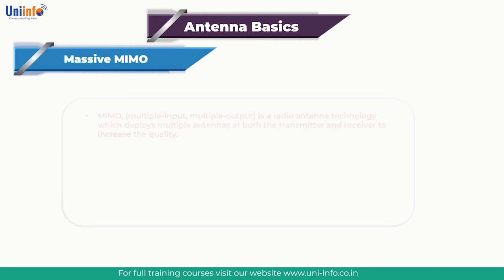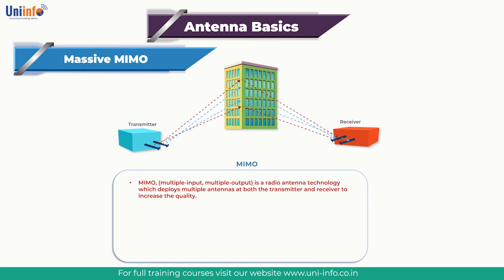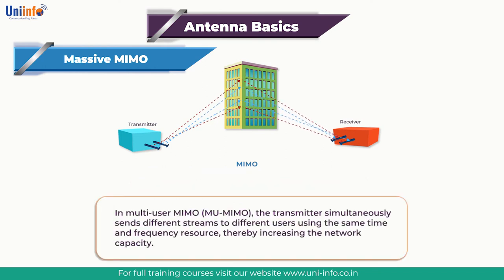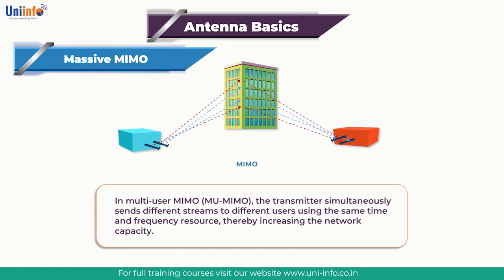Massive MIMO is a radio antenna technology that deploys multiple antennas at both the transmitter and receiver to increase the quality, throughput, and capacity of the radio link. MIMO uses techniques known as spatial diversity and spatial multiplexing to transmit independently encoded data signals, called streams, reusing the same time period and frequency resource. The transmitter simultaneously sends different streams to different users using the same time and frequency resource, thereby increasing network capacity. Spectral efficiency and capacity can be improved by adding additional antennas to support more streams, up to the point where power sharing and interference between users result in diminishing gains.